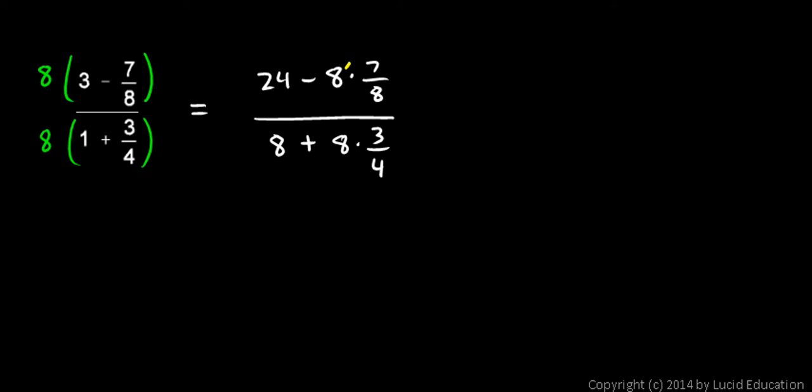Okay, up top, these 8's cancel out, and I have 24 minus 7. On the bottom, this 4 and this 8 reduce to a 2. And that 2 times 3 is a 6, so I have 8 plus 6.